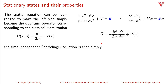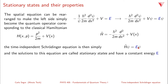Therefore, the time-independent Schrödinger equation can simply be written as the Hamiltonian operator applied to ψ equals E times ψ. The solutions to this Schrödinger equation are called stationary states, and they have constant energy E.